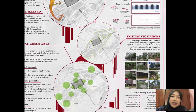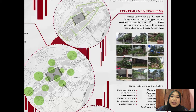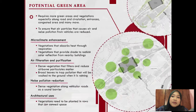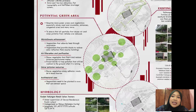Next, the soft scape elements in KL Central mainly act as barriers, hedges and increase aesthetic value. Most of the vegetation are from palm species as they require less maintenance and are easier to maintain. However, it is suggested that the area needs more greeneries, especially along the roads, to reduce air and noise pollution. Some of the potential uses of vegetation are as microclimate enhancement, air filtration and purification, noise pollution reduction and architectural uses. As the soil in KL Central is sandy soil, it is good for growing crops as it is more fertile.